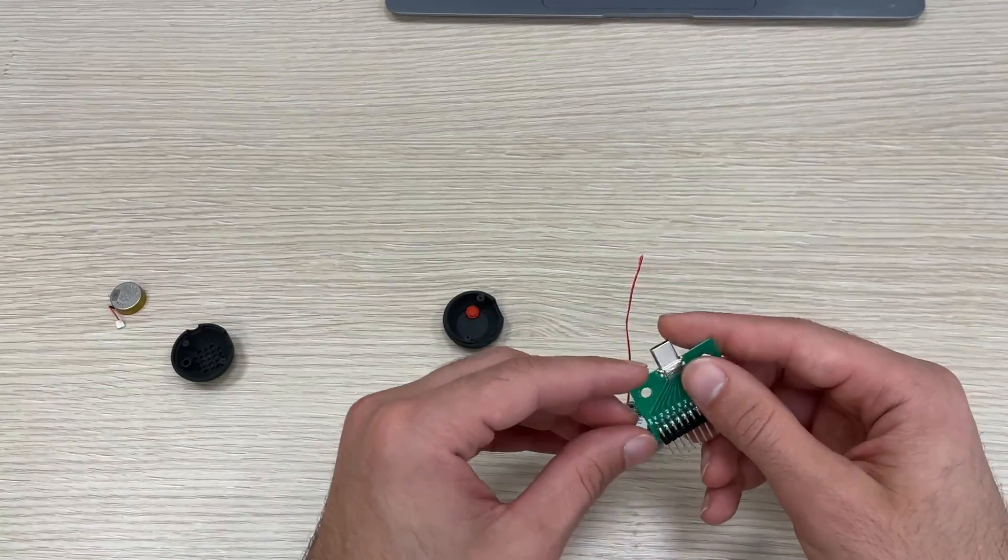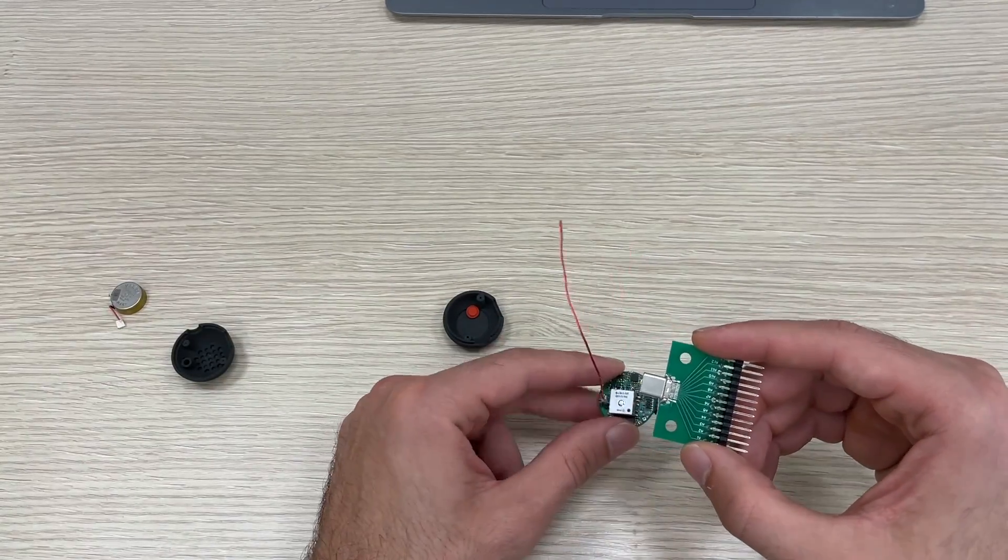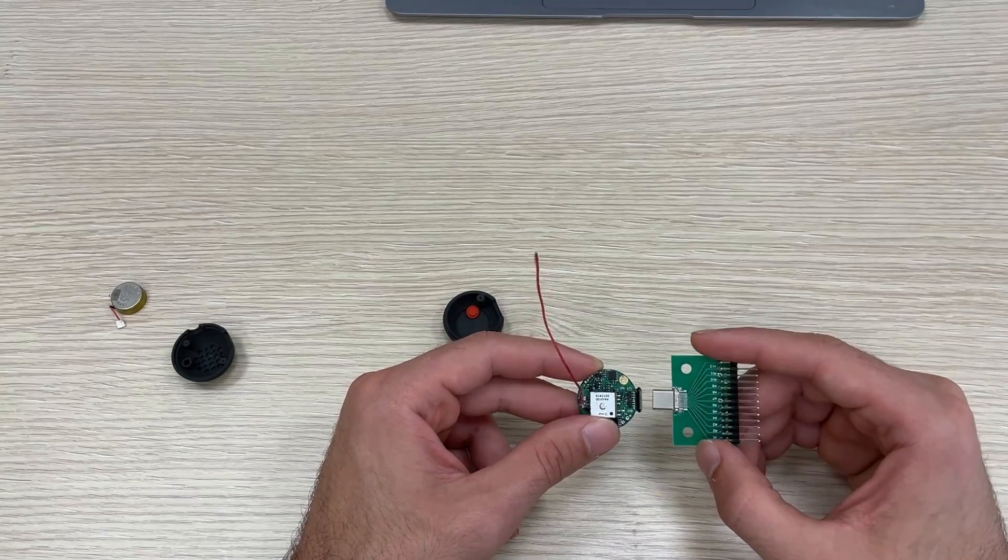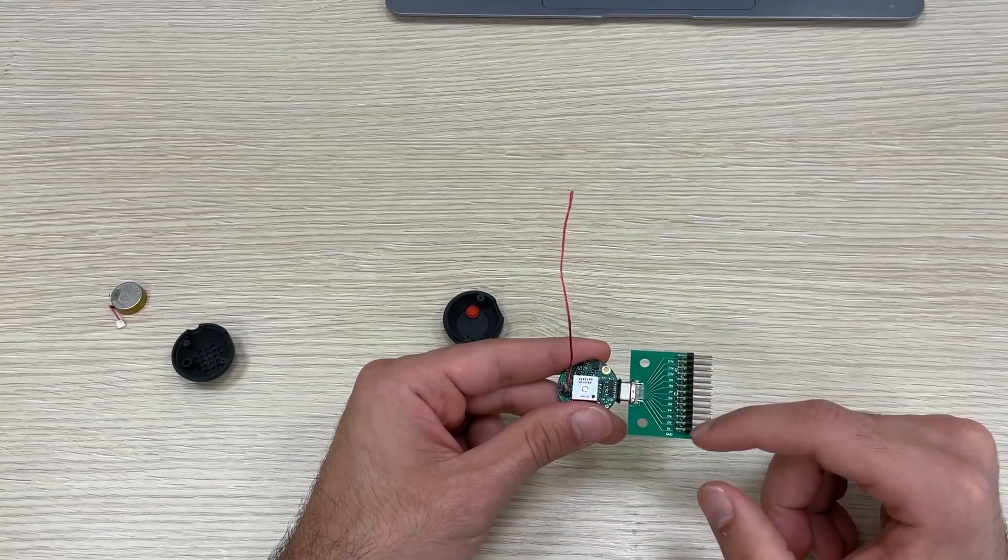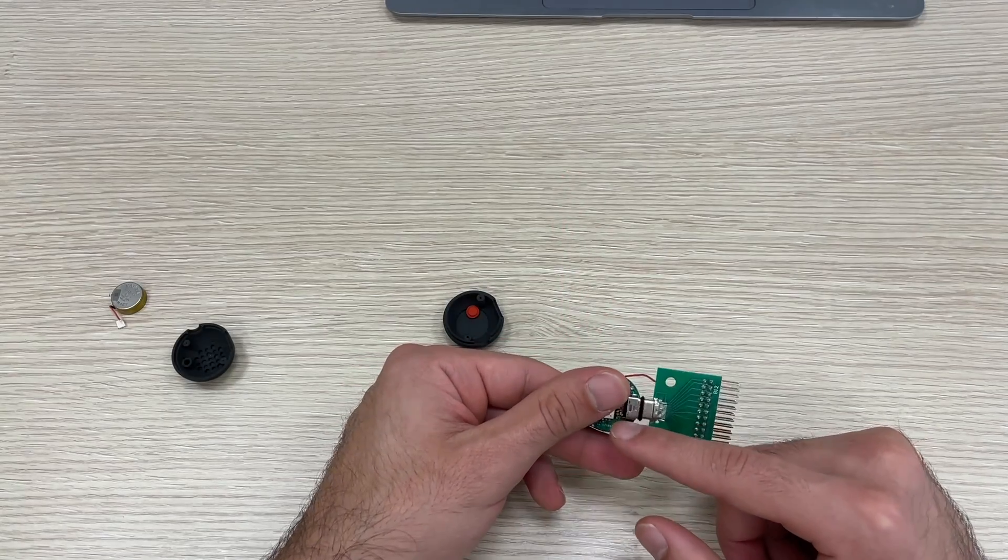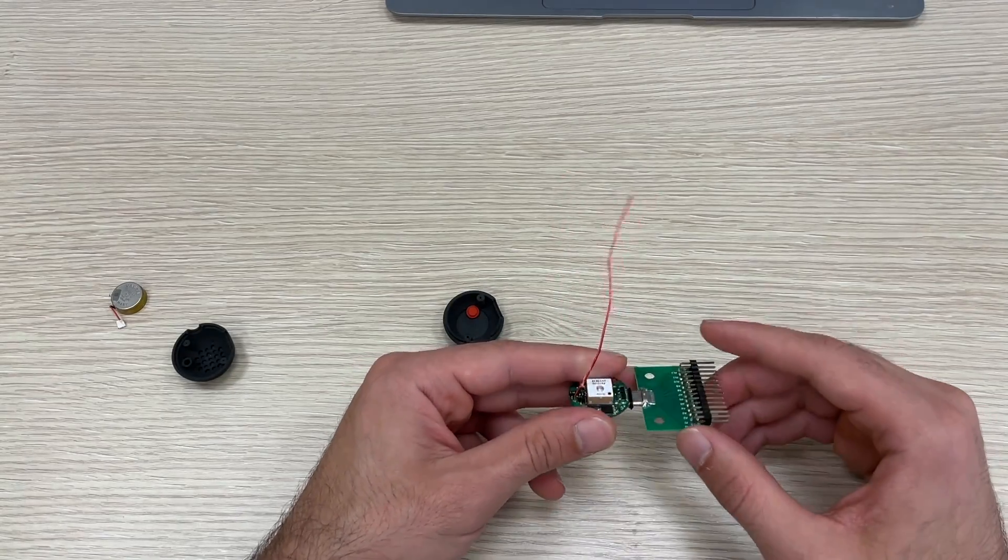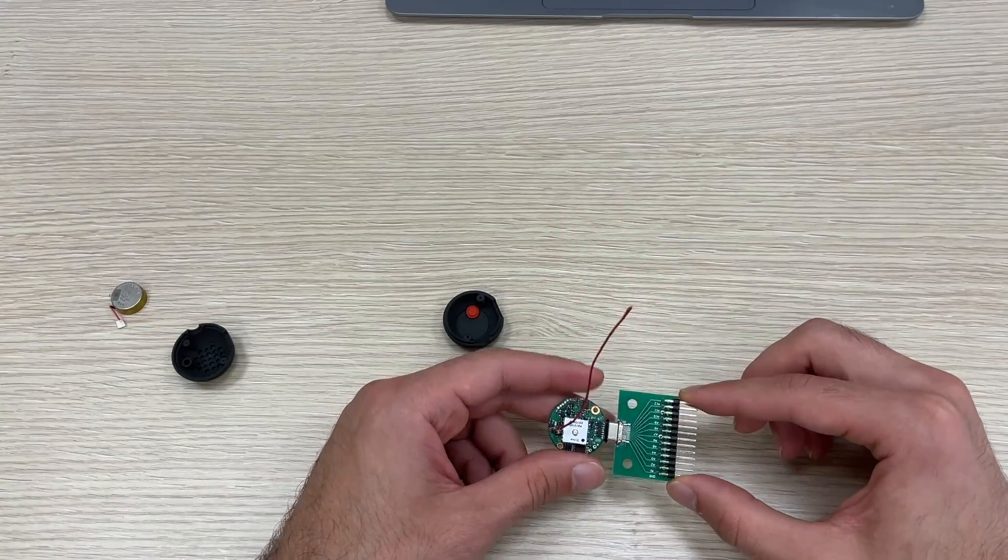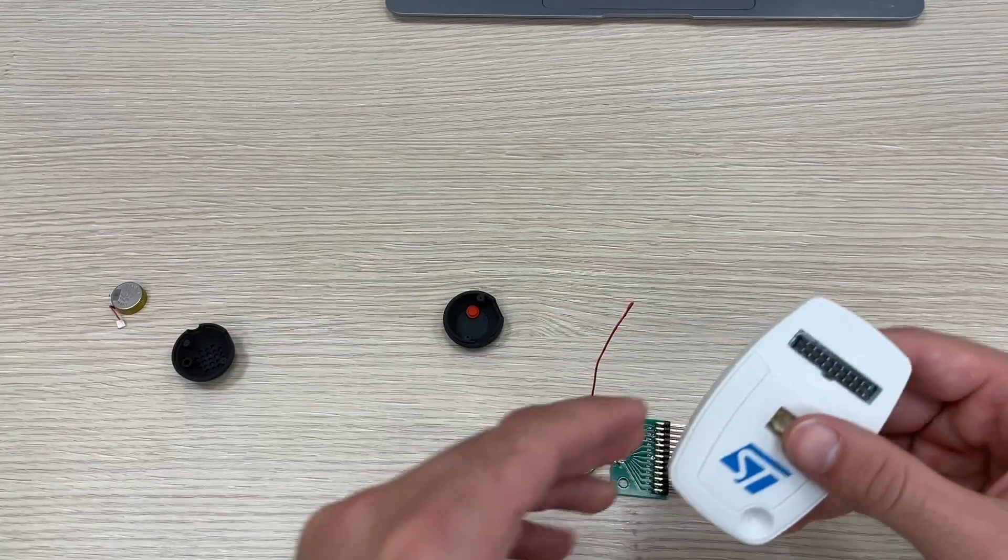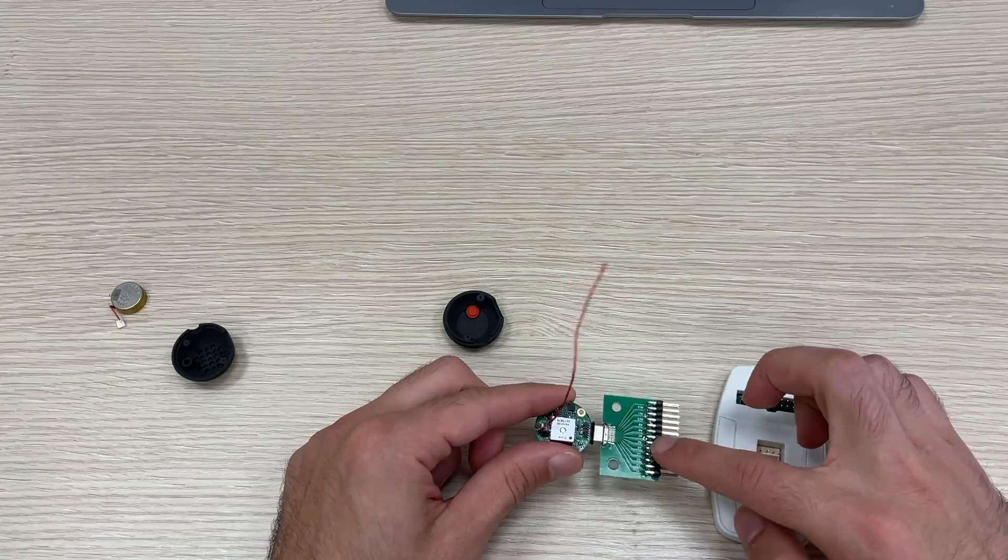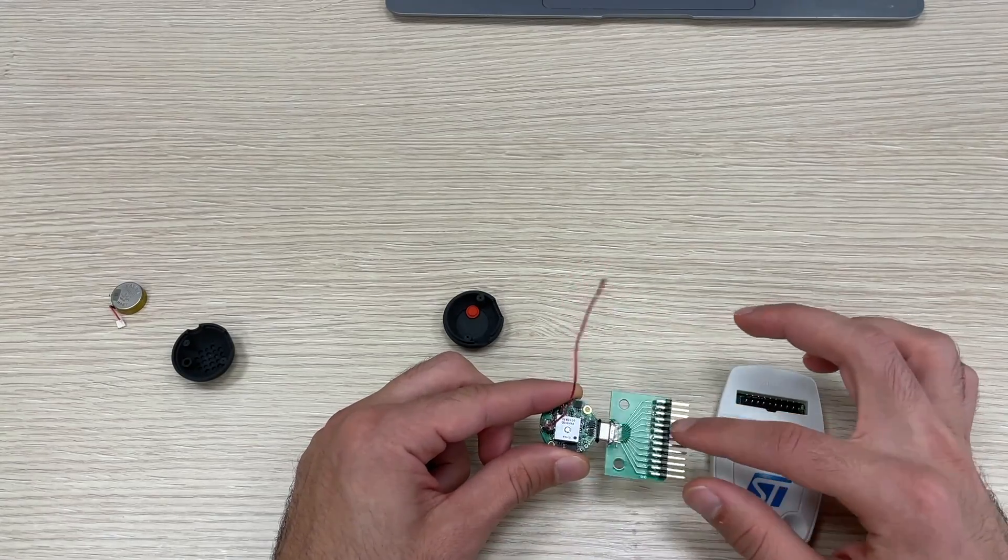So for this, each loka comes with this USB type-C extender board. This port gives access to all the pins of the USB type-C connector on the loka. By using cable jumpers we can easily connect the ST-Link debugger to the loka from USB type-C.